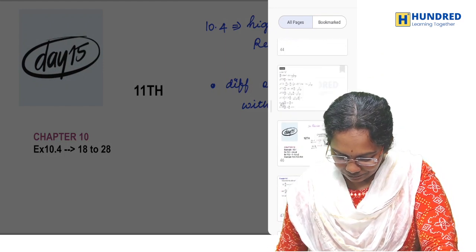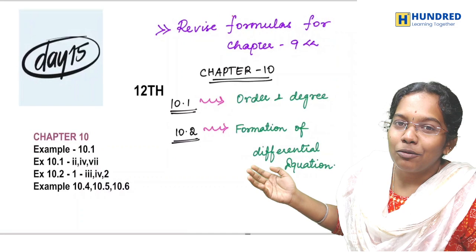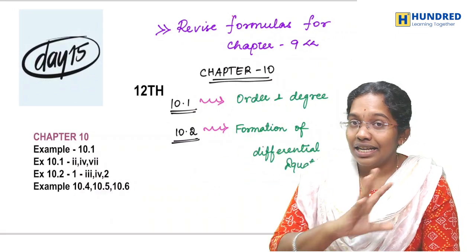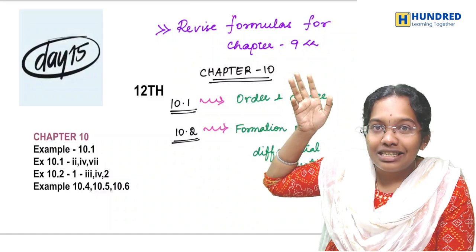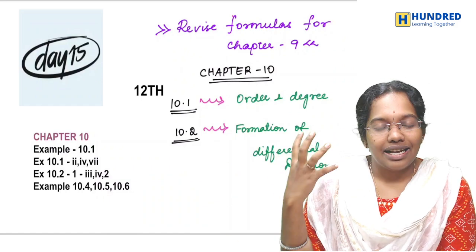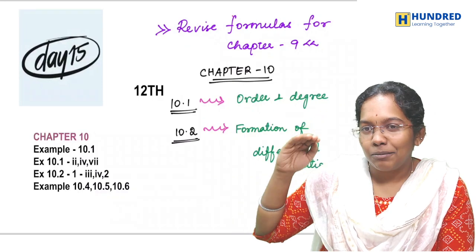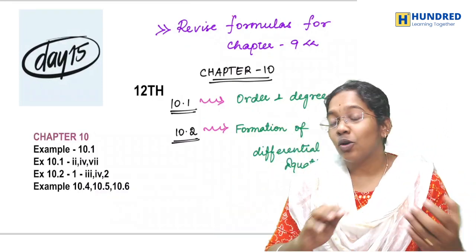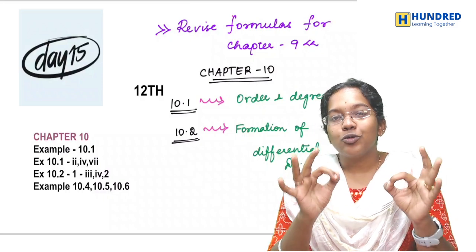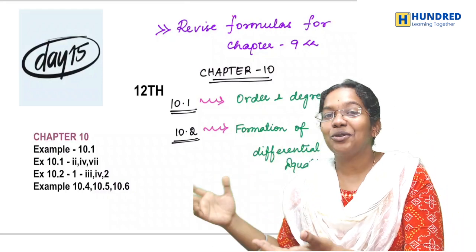12th students' targets: Let's see, Chapter 9, Chapter 8 was so easy. Today's chapter is Chapter 10. Today I've given you very easy topics which is order and degree and formation of differential equations by eliminating arbitrary constants. Complete this, then Chapter 9. If there are many backlogs, complete Chapter 10 today, then focus on clearing Chapter 9 backlogs.